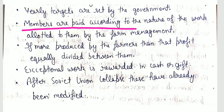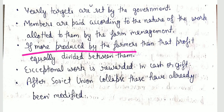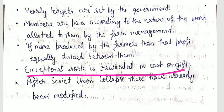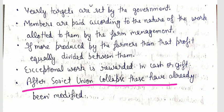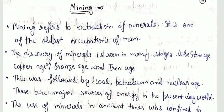Members are paid according to the work allotted by farm management. If farmers produce extra, it is divided equally among all. Exceptional work is rewarded in cash or gifts. After the Soviet Union collapsed, these systems have already been modified.